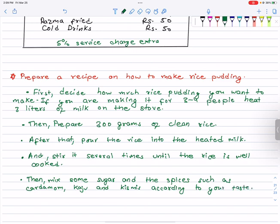Then mix sugar and the spices such as cardamom, caju and kismis according to your taste. Sugar, then spices, whatever you have such as cardamom, caju, kismis according to your taste. Next.